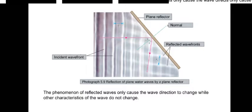This photography shows reflection of plane water wave by a plane reflector. The phenomenon of reflected waves only causes the wave direction to change while other characteristics of the wave do not change.